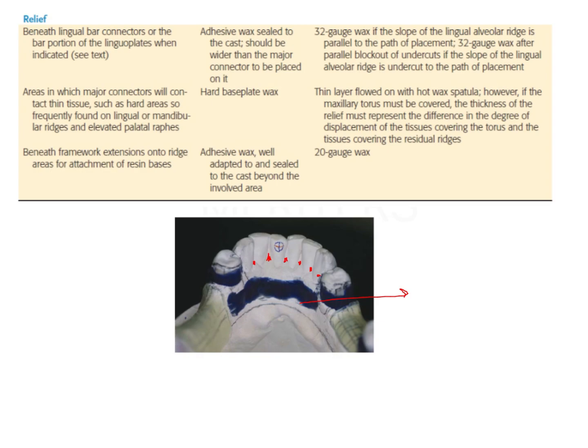Some very important examples of relief areas commonly provided: beneath the lingual bar major connector or lingual plate, major connectors in contact with thin tissue such as hard areas on the lingual or mandibular ridges, elevated palatal raphae, and beneath framework extension onto ridge areas for attachment of resin bridges. If you have to allow some amount of acrylic to flow underneath, then you will provide relief.